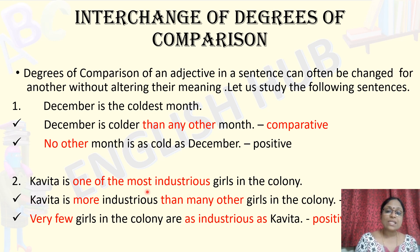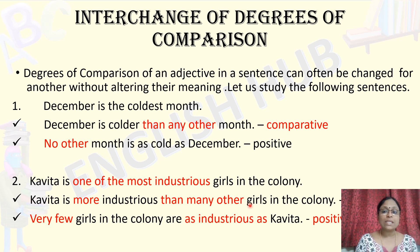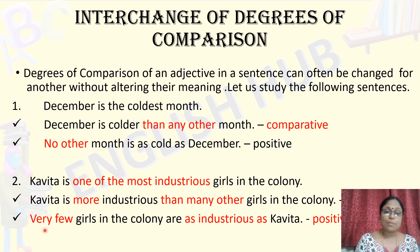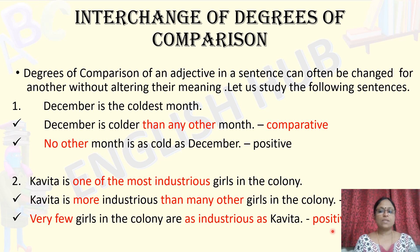The comparative form is: Kavita is more industrious than many other girls in the colony. As noted, we cannot add the suffix -er, so we use 'more.' The keyword here is 'many other girls,' compared to the first set where it was 'any other.' For positive degree, it begins with 'very few': Very few girls in the colony are as industrious as Kavita.